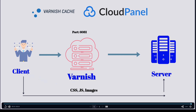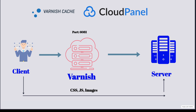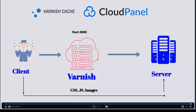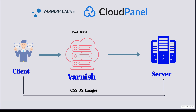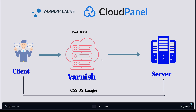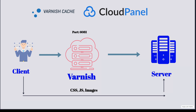The client goes to Varnish Cache first. If the page is there, it's served directly from Varnish Cache. If not, Varnish Cache sends the request to the server to cache the page. In Cloud Panel, this is done via port 6081 — requests go to this port and it checks if the page is cached. CSS, JS, and images are not cached in Varnish; they are served directly from the Nginx web server.